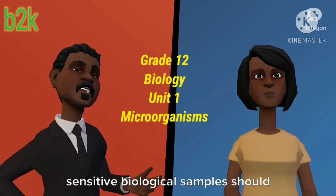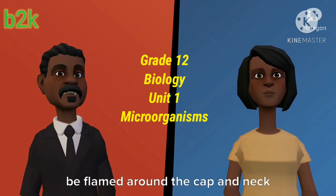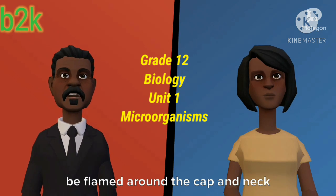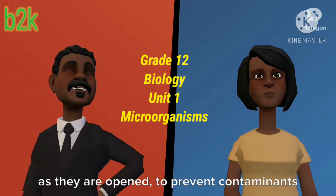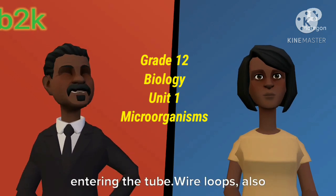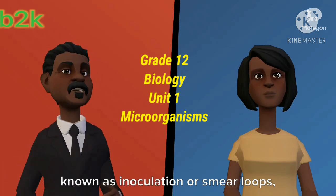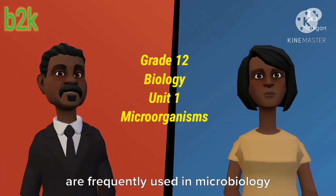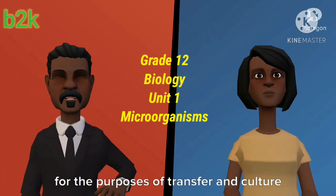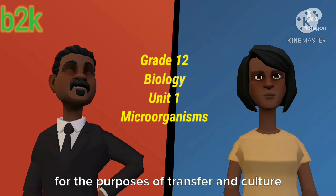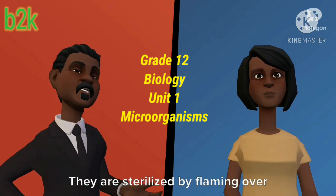Test tubes and other vessels containing sensitive biological samples should be flamed around the cap and neck as they are opened to prevent contaminants entering the tube. Wire loops, also known as inoculation or smear loops, are frequently used in microbiology for the purposes of transfer and culture of microorganisms.